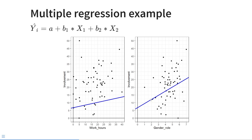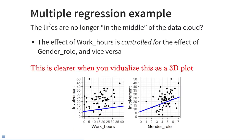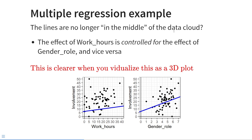Why is the regression line not in the middle of the data? Because this regression model gives us the regression line for people who scored zero on gender roles, and the other regression line gives us the effect of gender roles for people who scored zero on hours worked. When conducting multiple regression, this slope is the slope for people who scored zero on the other predictor. The lines are no longer in the middle of the data cloud because the effect of work hours is controlled for the effect of gender role and vice versa.